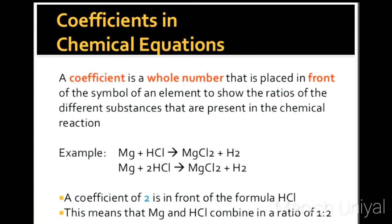Coefficient in chemical equation. A coefficient is a whole number that is placed in front of the symbol of an element to show the ratio of the different substances present in the chemical reaction. For example, magnesium reacts with hydrochloric acid to give magnesium chloride and hydrogen gas. The balanced chemical equation is: Mg + 2HCl → MgCl₂ + H₂. Here, a coefficient of 2 is in front of the formula HCl. This means that Mg and HCl combine in the ratio of 1:2.